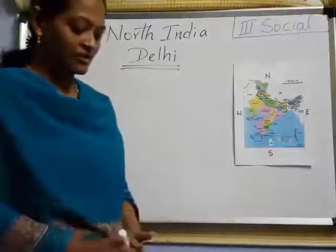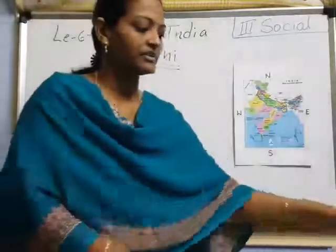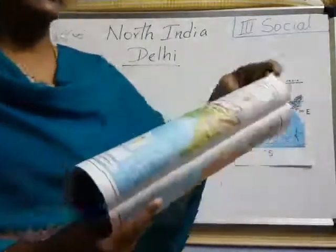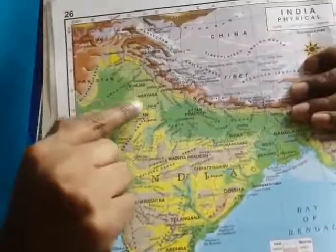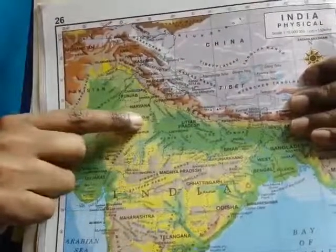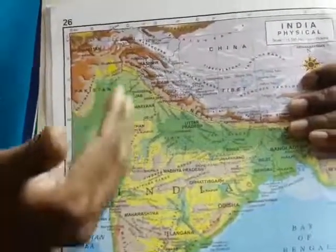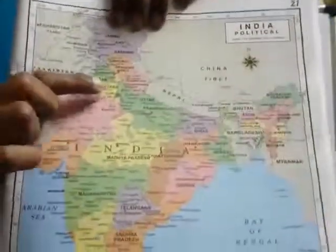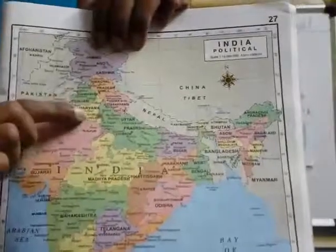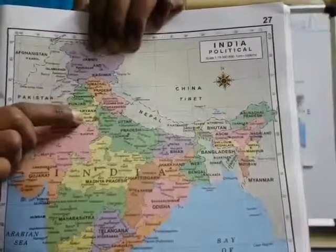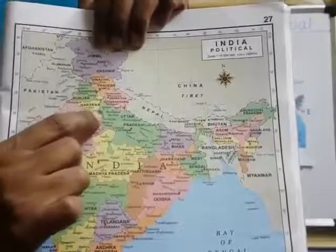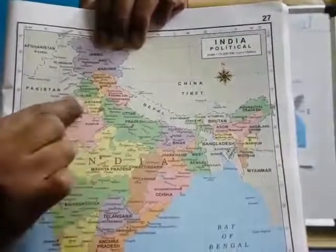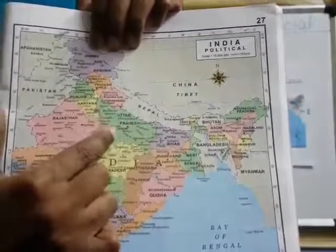Exactly where it lies — children, I will show you in the India map. Look here. This is the Atlas book. Now in this Atlas book, our India map. Look here — there is a red point. This is Delhi. Towards its West side, which state is there? Haryana. Towards the East side, we have Uttar Pradesh. So it lies — to its West, Haryana, and to its East, Uttar Pradesh.